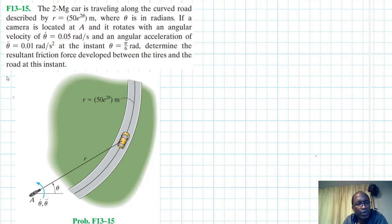Hello, I welcome you all. The problem reads that the 2 megagram car is traveling along the curved road described by r equal to 50 e to the power 2 theta in meters, where theta is in radians.